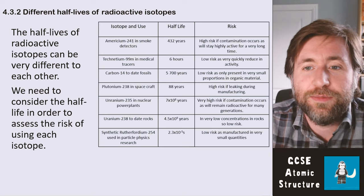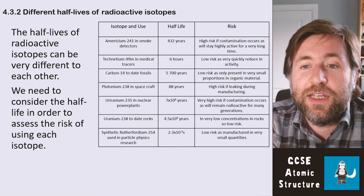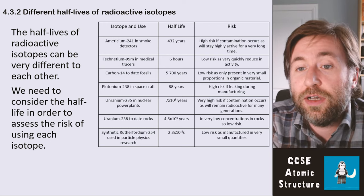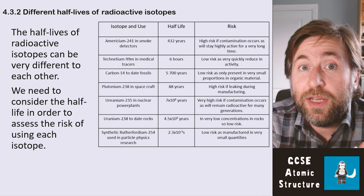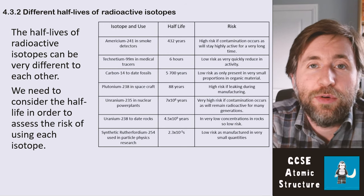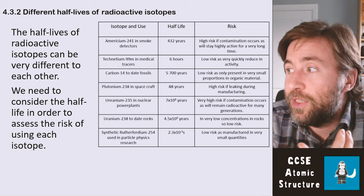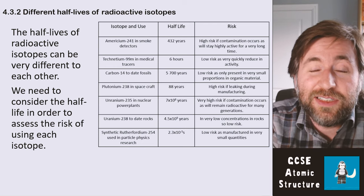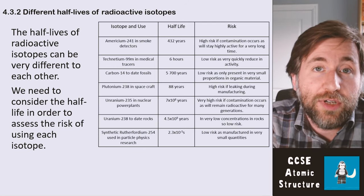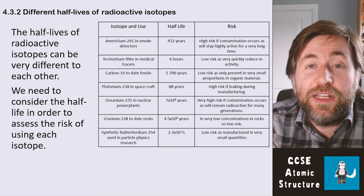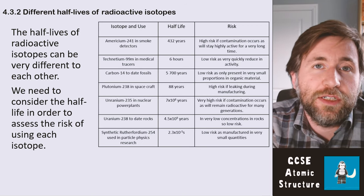Carbon-14 is a common isotope used to date fossils, with a half-life of 5,700 years, which is great for dating how old fossils are. It's a low risk because in most living things there is a very small proportion of carbon-14, but it is the source of background radiation that comes from organic matter.